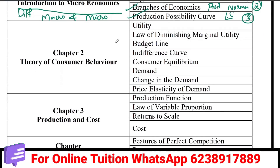Let's look at the theory of consumer behavior and demand — utility — and there are three approaches: the Cardinal approach, the Ordinal approach, and the Revealed Preference approach.